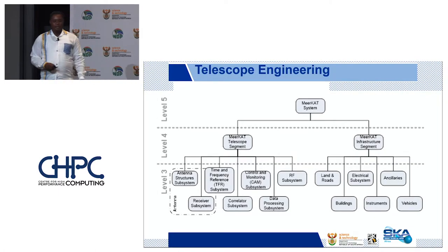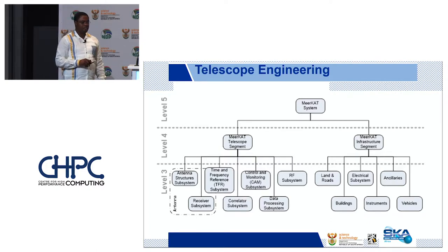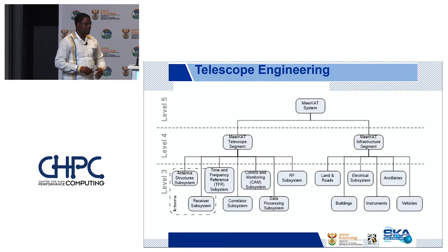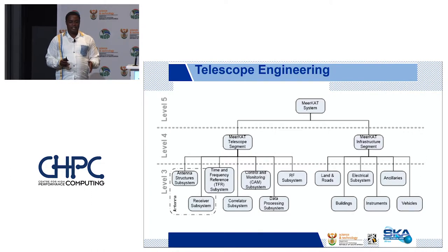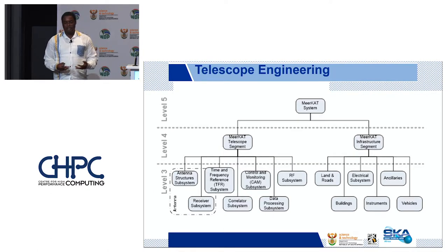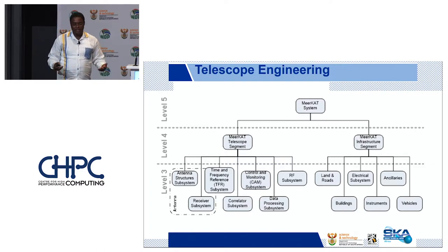As an engineering project, it breaks down into several components. At the top, level five is the MeerKAT system. We've got two major groups. One is the MeerKAT Infrastructure Segment — these guys are responsible for the site: making sure we have a site, we can get to the site, when we put things on the site the lights will actually come on, and it won't get stolen.